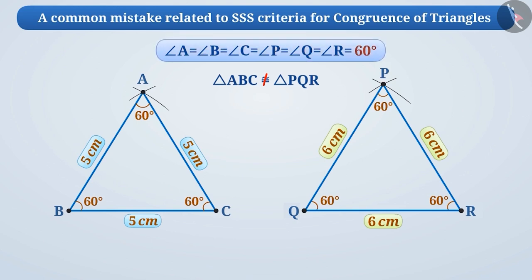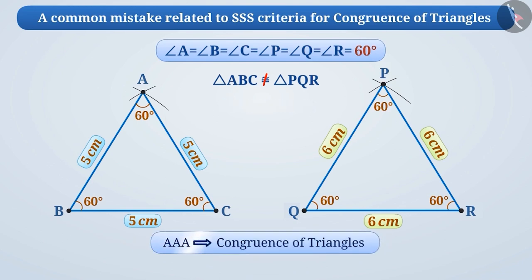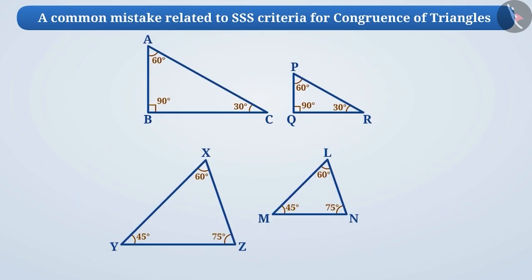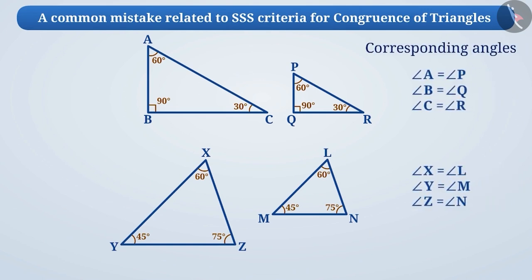Therefore, no two triangles can be called congruent solely on the basis of the measure of their angles. Therefore, the congruency of two triangles cannot be checked by the AAA criterion. Similarly, by looking at other pairs of triangles, you will find that even if the corresponding angles are equal, they may not be congruent.